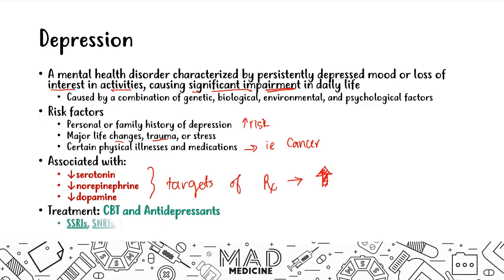When it comes to antidepressants, you have SSRIs, SNRIs, tricyclic antidepressants, monoamine oxidase inhibitors, and also the atypical antidepressants. We're going to be talking about all of these drugs in upcoming lectures, but today in this lecture we're going to be discussing SSRIs and SNRIs.